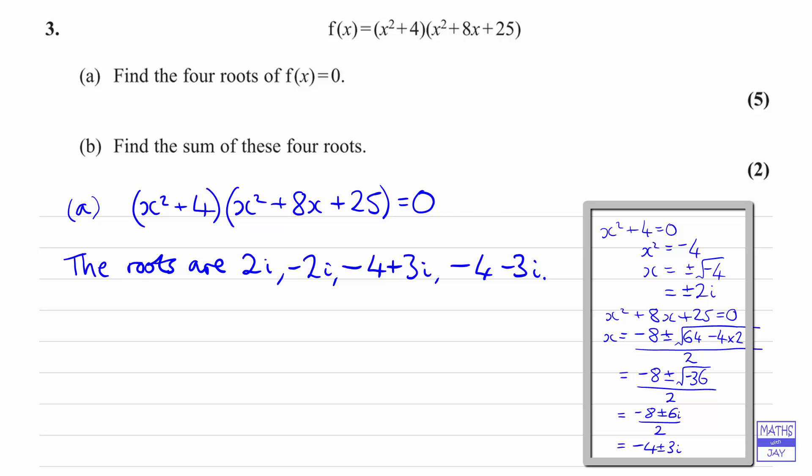That completes part a. So in part b all we need to do is add together these four numbers. So we've got 2i - 2i, then we've got -4 + 3i - 4 - 3i. So you can see there that all the terms in i cancel out, so all we're left with are two negative fours, so the answer is -8.